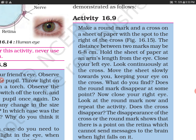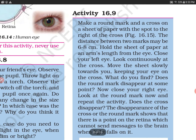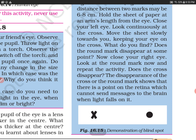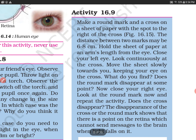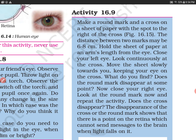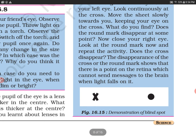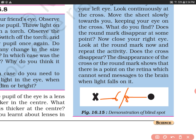In this activity, you are supposed to mark a round mark and a cross on a sheet of paper, with the spot to the right of the cross — as you can see in Figure 16.5. So we mark two points: one is a cross and the other is a round dot. The distance between the two marks should be 6 to 8 centimeters.